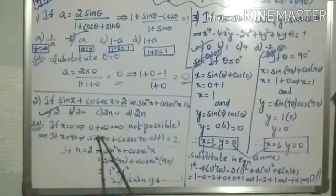When I substitute θ = 0: x = sin 0 + cos 0 = 0 + 1 = 1. Similarly for y = sin θ × cos θ, substituting θ = 0 gives y = sin 0 × cos 0 = 0 × 1 = 0. So I got x = 1 and y = 0.